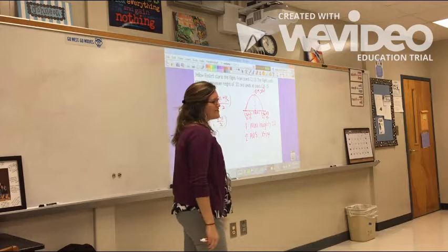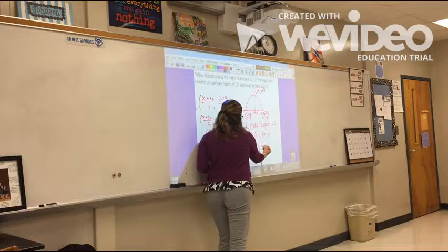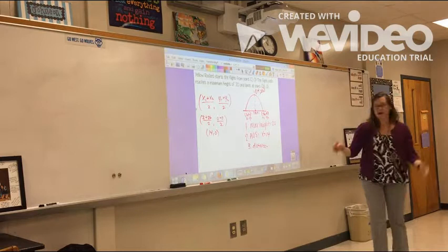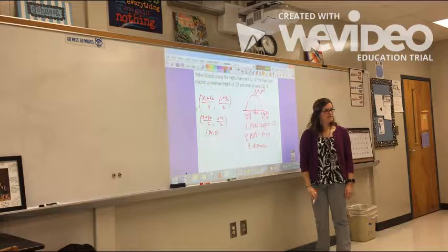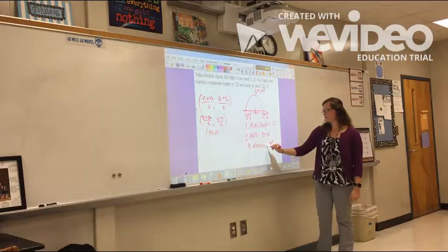Alright, third thing, I want the distance traveled. Well, what that means is the distance traveled over the x-axis, pretty much, from the ground. So starting point to the end point. That's 24. That's 24.